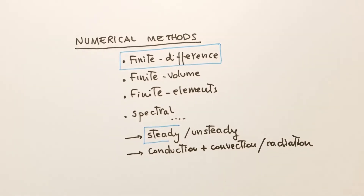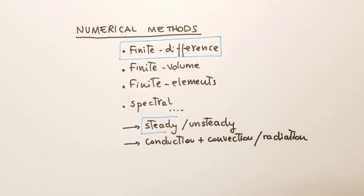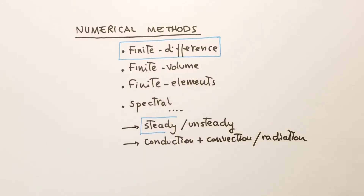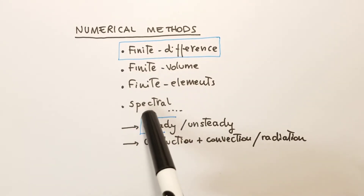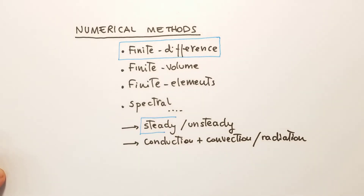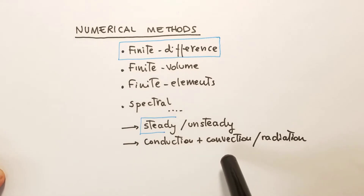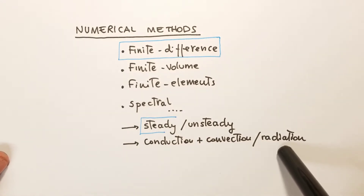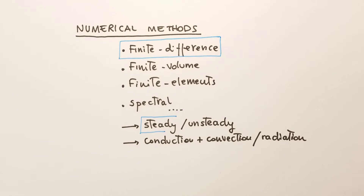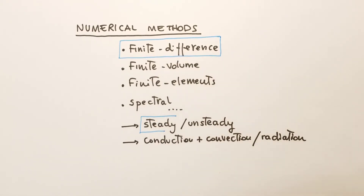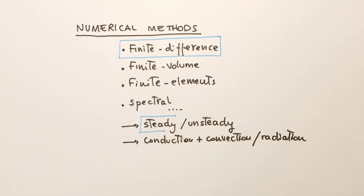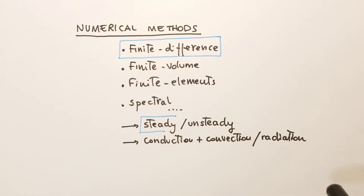Numerical methods can be of different kinds. We can have finite difference methods, finite volume, finite elements, or very accurate spectral methods. We can study steady or unsteady problems, or conduction, convection, and even radiation can be included. But in our discussion, we focus on finite difference methods and concentrate on steady conduction problems, neglecting convection and radiation.